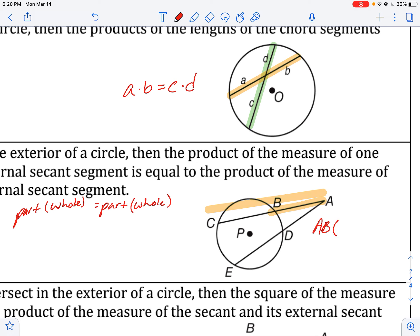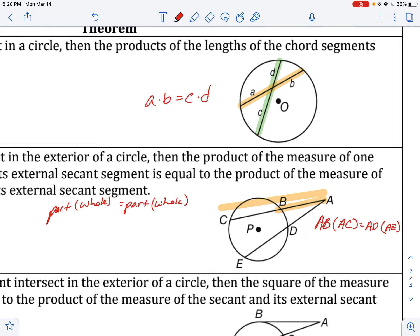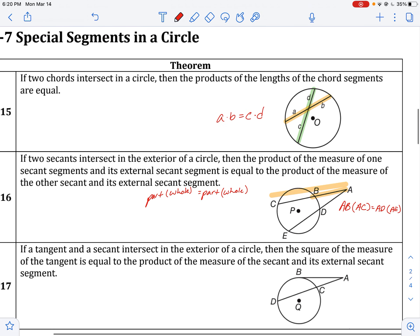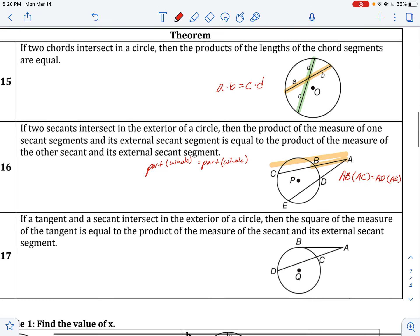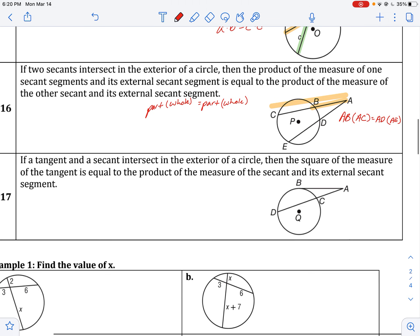AB times AC equals AD times AE. So AB times AC equals AD times AE. And of course, since that is commutative, the order really doesn't matter.